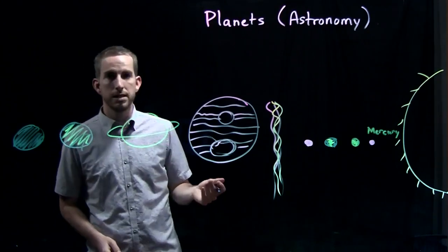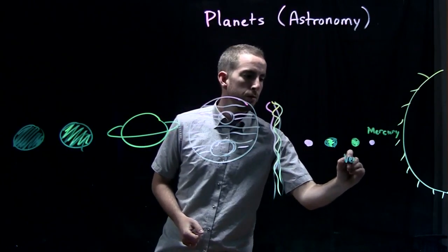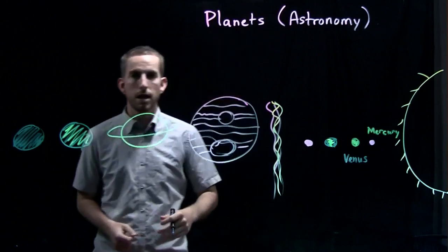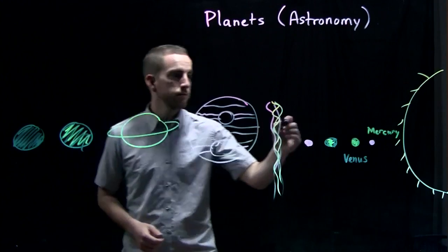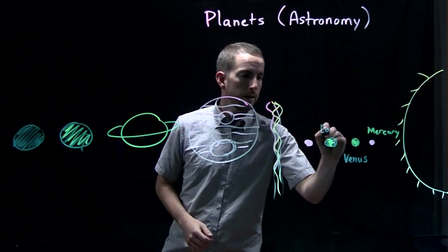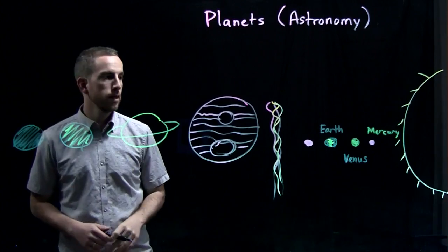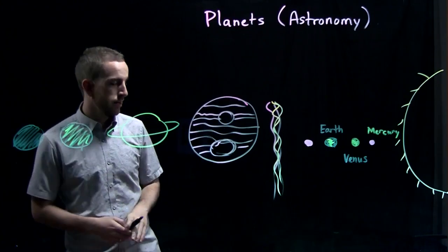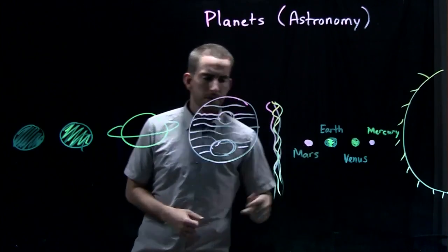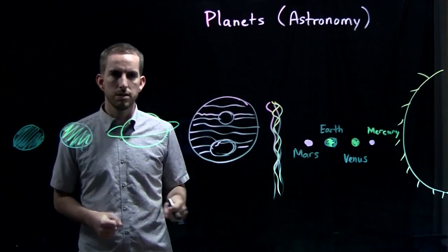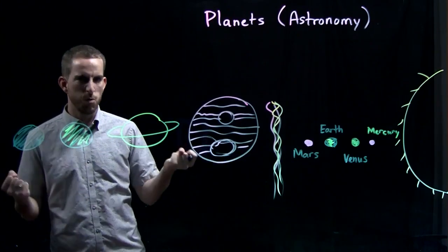And next we have Venus. Venus in Roman myth was goddess of love. Then we have Earth. Earth is not based on Roman myth. After that we have Mars. He was kind of an angry god. He was the god of war. 화성. So 화 for Mars. Fire and war.